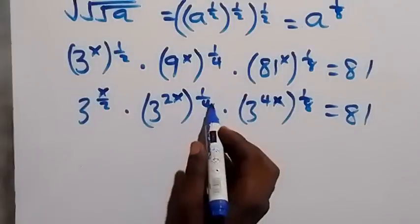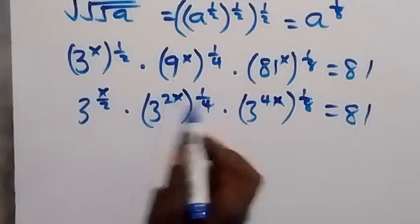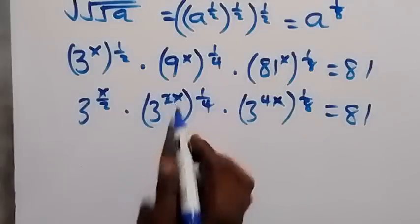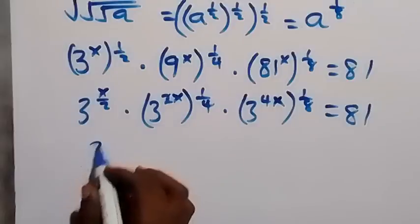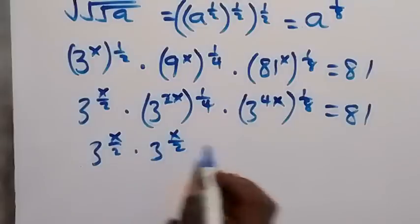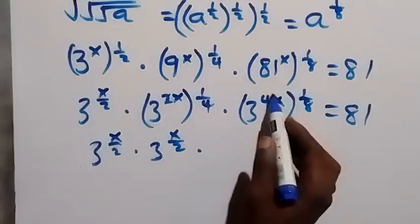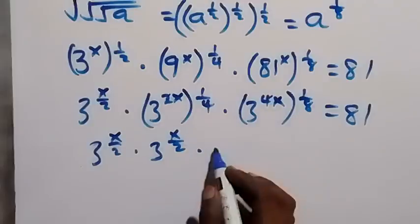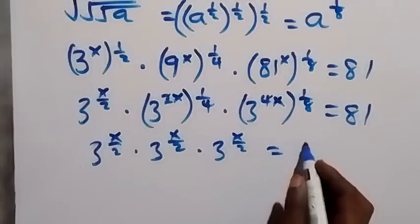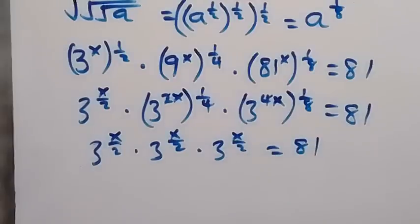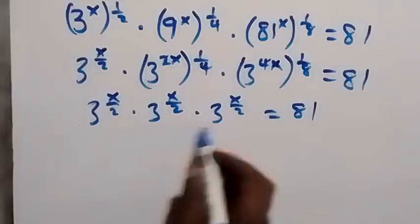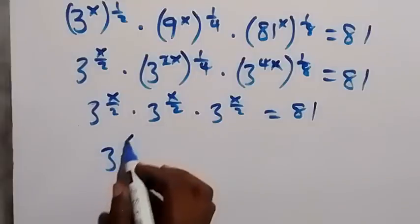Simplifying the exponents: 4 times one-quarter gives 1, and 2 times one-quarter gives one-half, so we get x over 2. We have 3 raised to power x over 2, times 3 raised to power x over 2. Also 4 times one-eighth gives one-half, giving 3 raised to power x over 2. So all three terms are 3 raised to power x over 2.